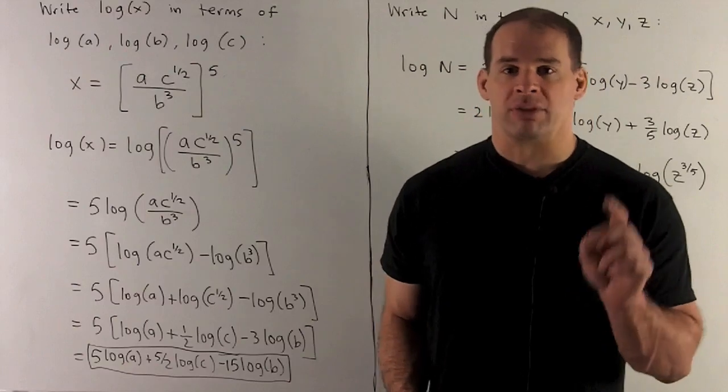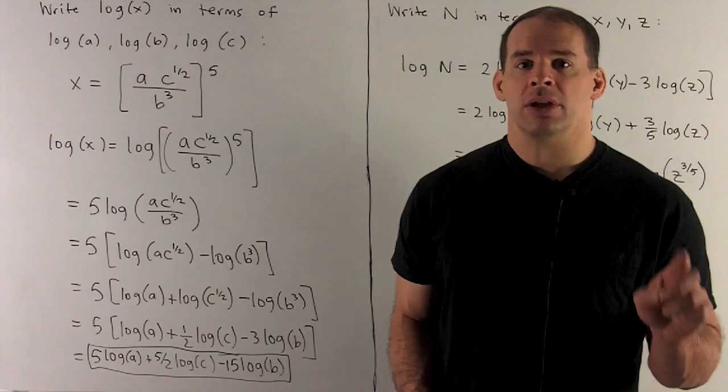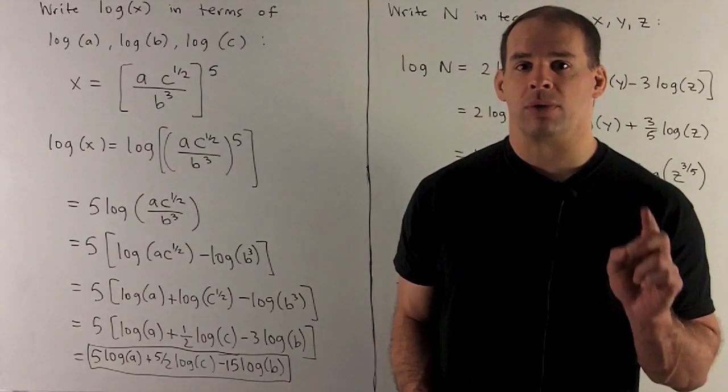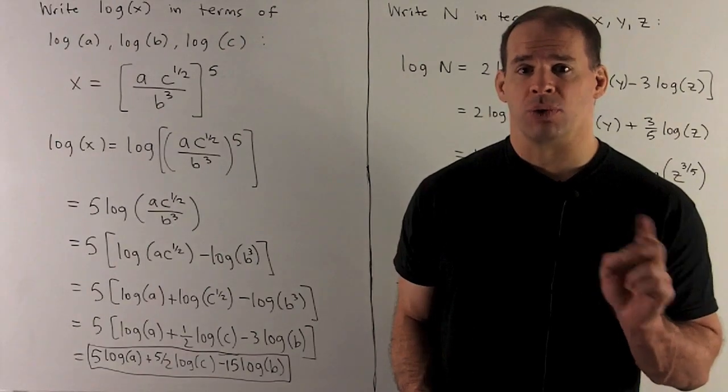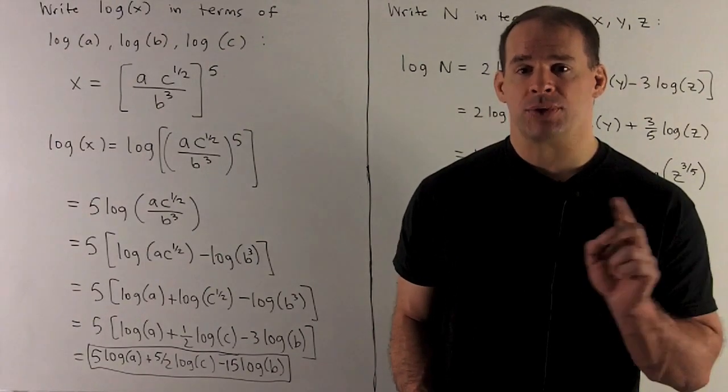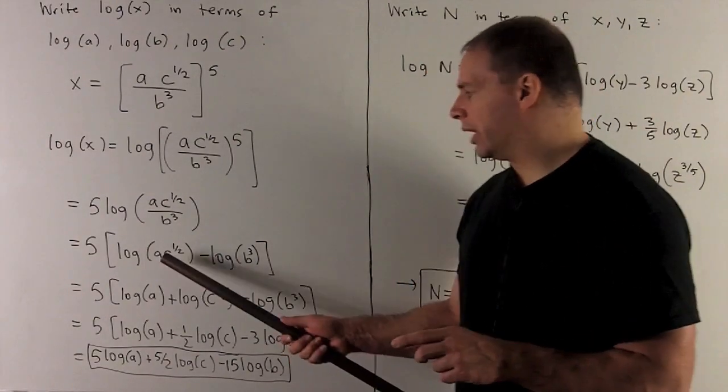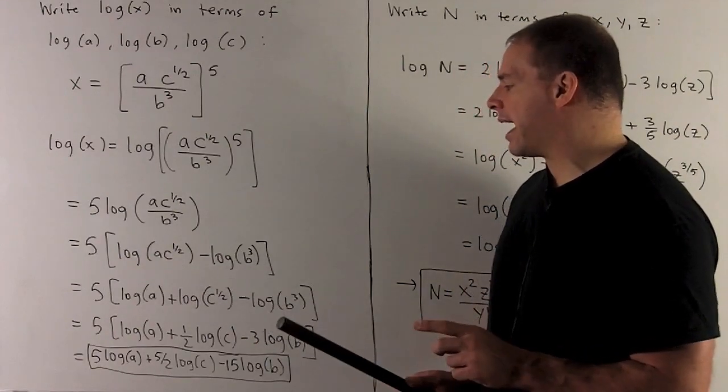Next, we have a product inside of a logarithm. So we'll use the product rule for logarithm, which just says you can write it as a sum of two logs. So here we'll have log A plus log C to the 1 half.